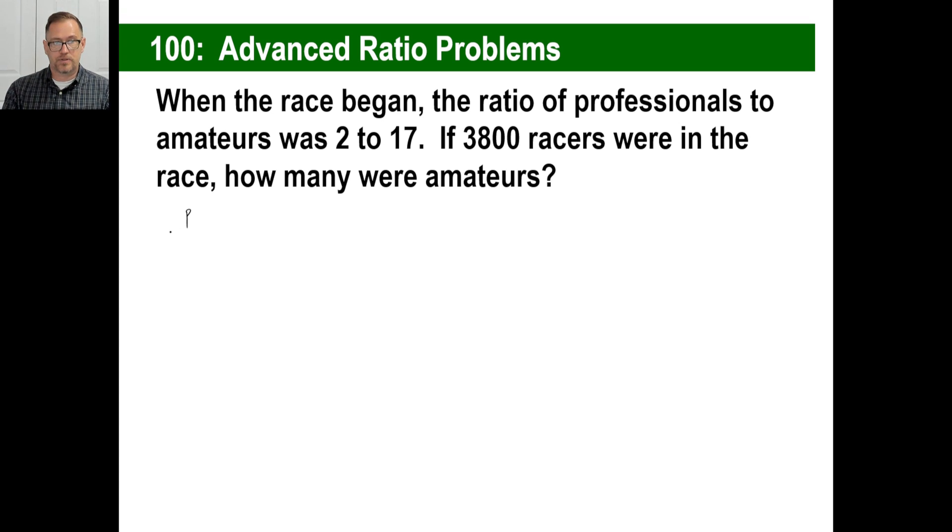Pros to amateurs. You should have had. That's 2 to 17. Pros to total. That's going to be 2 to 19. Amateurs to total. That's going to be 17 to 19. All right. Which one are they asking? 3800 racers were in the race. That's the total. So, we're not using that one. How many were amateurs? Nope. There we go. Let's use this one.